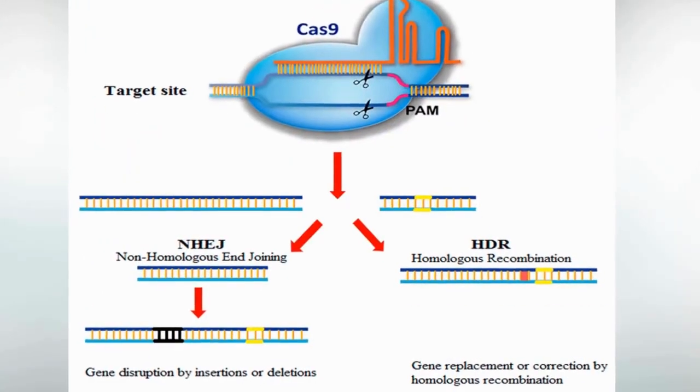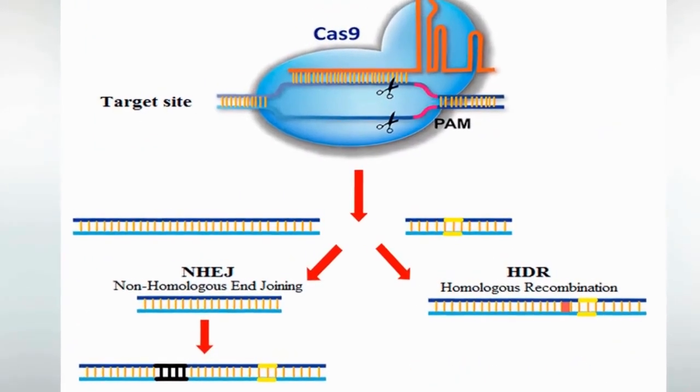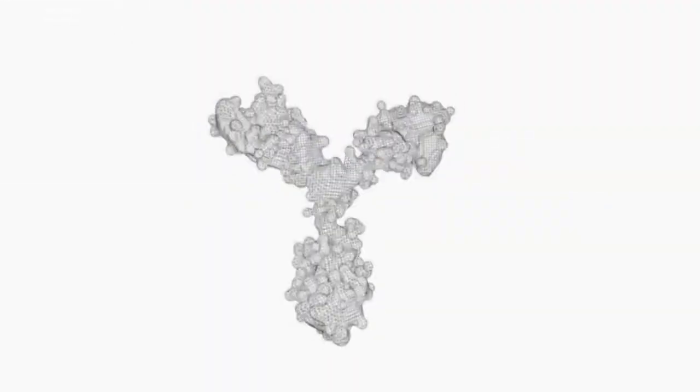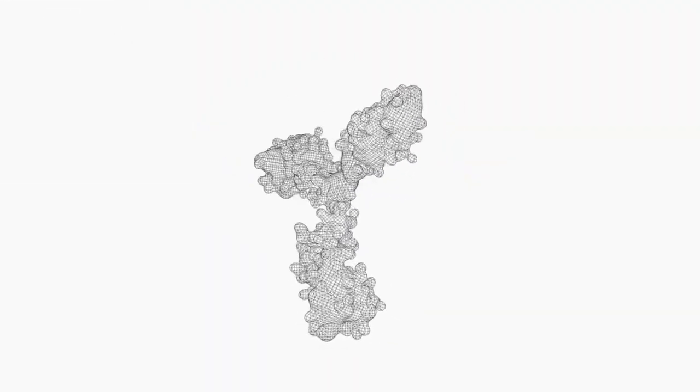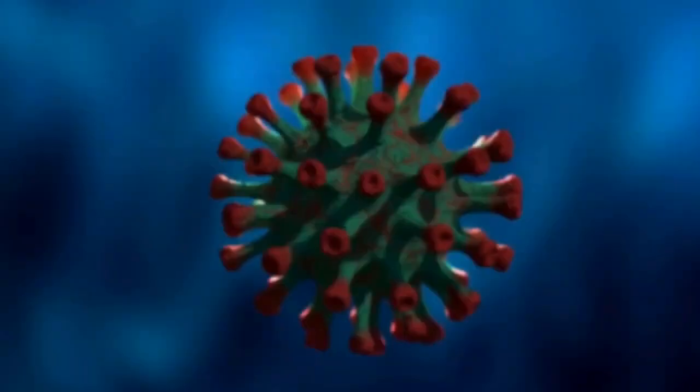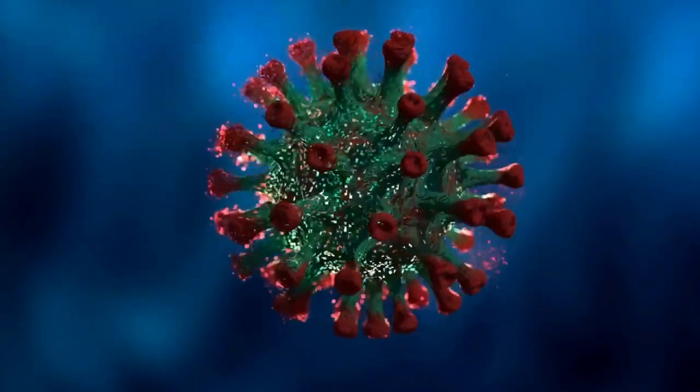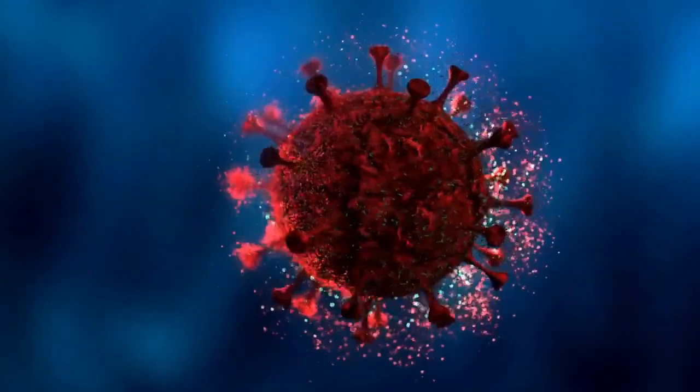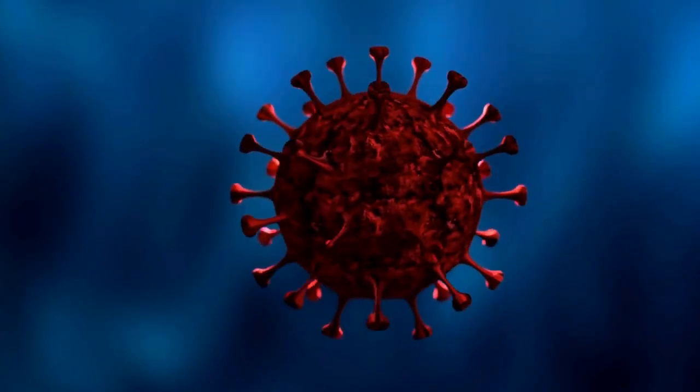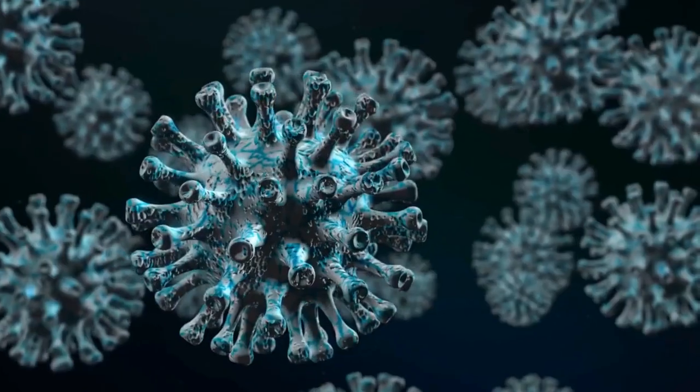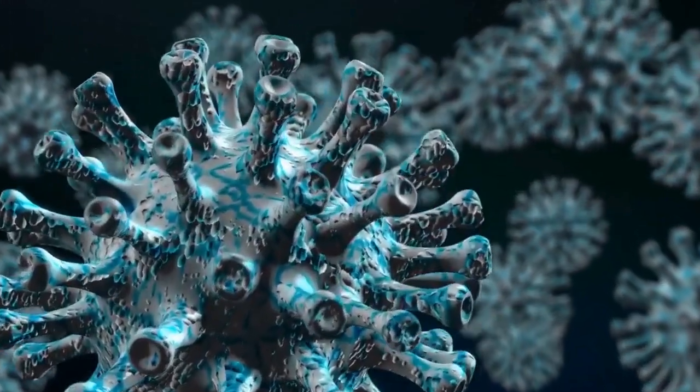CRISPR, a game-changer in genetic engineering, initially showed promise in removing HIV genes from human T-cells. Yet challenges arose as the virus rapidly mutated, evading detection and potentially enhancing resistance. To improve cell editing, vectors, non-HIV-related virus shells, were introduced as a delivery mechanism for CRISPR.